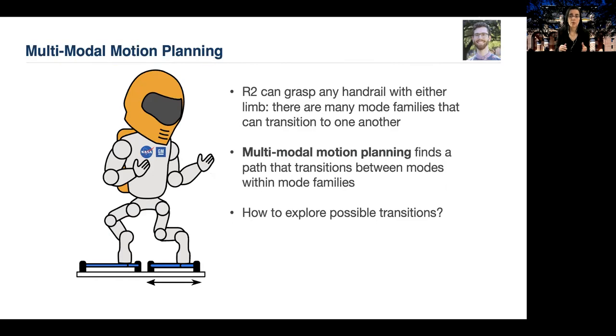Also, in manipulation and locomotion problems such as these, there isn't just one family of constraints, but multiple. In this example, R2 can grasp either handrail. Moreover, given all the different families of constraints, there are only certain transitions allowed. For example, R2 can't just hop with one limb to the next handrail. It needs to re-grasp with its other limb first. In order to search the space effectively, an algorithm has to choose what transition between constraints to explore. We call this multimodal planning. Multimodal motion planning finds a path that transitions between modes within mode families.